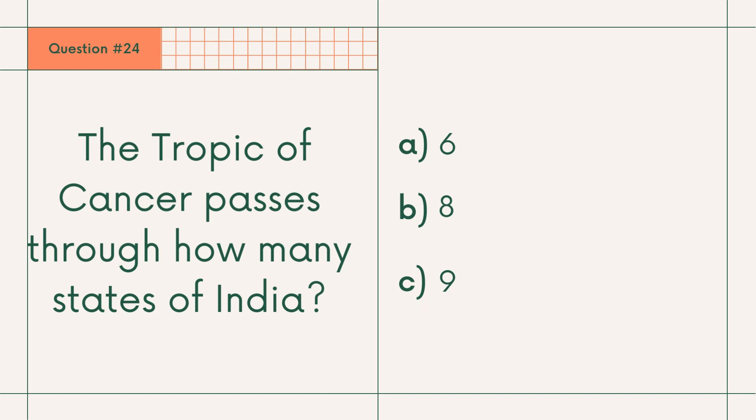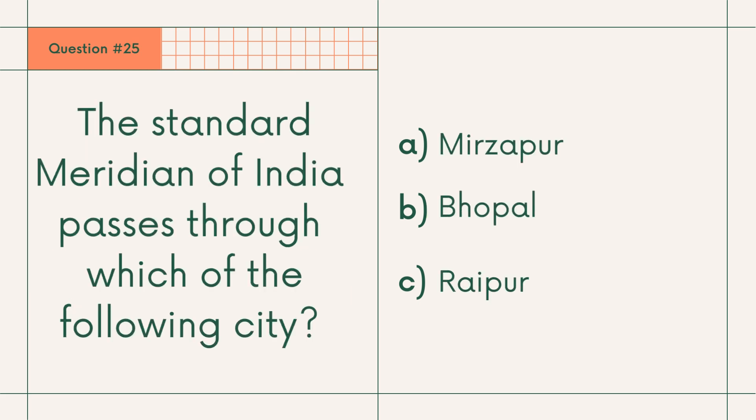Question 24: The Tropic of Cancer passes through how many states of India? A. Six states, B. Eight states, or C. Nine states. Answer: B. Eight states.